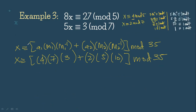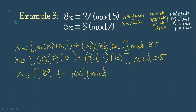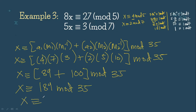Now let's simplify. x ≡ (4 × 7 × 3) + (2 × 5 × 10) = 84 + 100 = 184 (mod 35). Dividing 184 by 35 gives a remainder of 9. So x ≡ 9 (mod 35), meaning our value of x is 9.